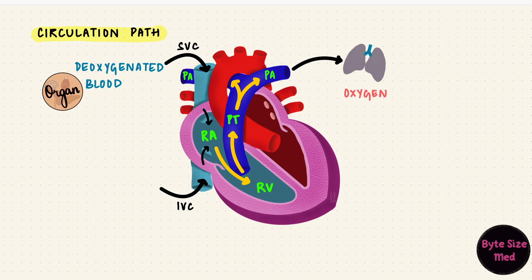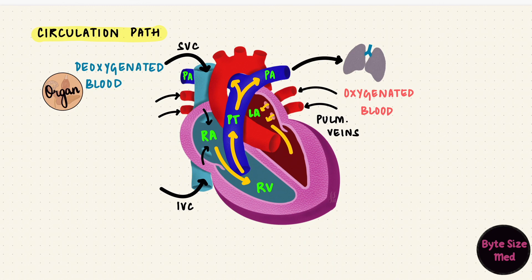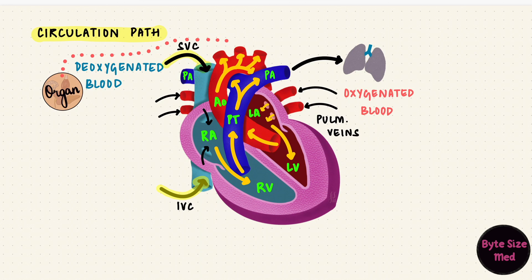The lungs do their job of oxygenating that blood. Oxygenated blood returns to the left heart. The four pulmonary veins bring that blood back to the left atrium. Blood then moves into the left ventricle. The left ventricle pumps it through the aorta, which then leads into the arterial system, distributing it to the whole body. Once the tissues use what they want, the deoxygenated blood comes back to the right heart through veins, which ultimately lead into the superior and inferior vena cava.